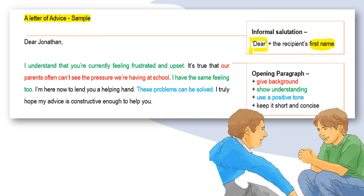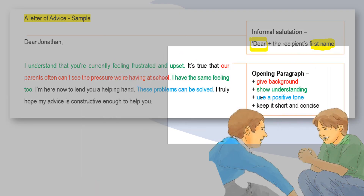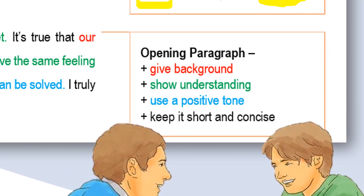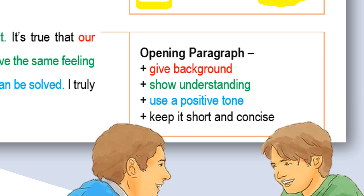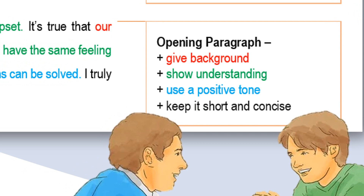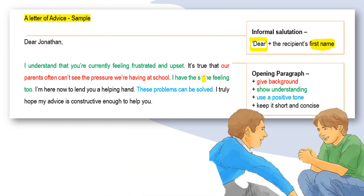Some students often have a problem writing the first paragraph. In the opening paragraph, you want to achieve a few points: first, give the background information and introduce the problem Jonathan is having. Very importantly, show understanding and your support with a positive tone. You don't want to be too negative. Keep it short because your advice will be given in the following body paragraphs.